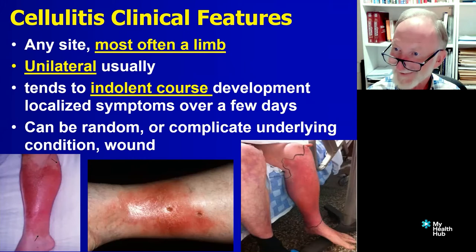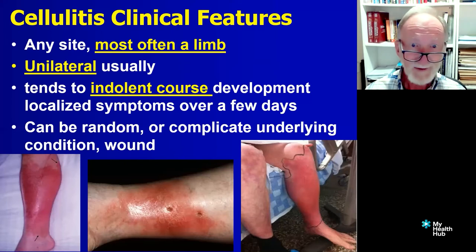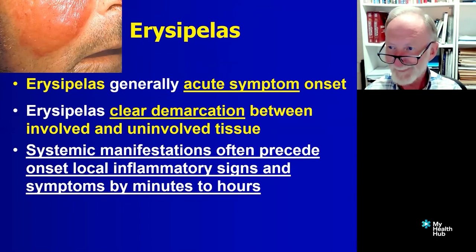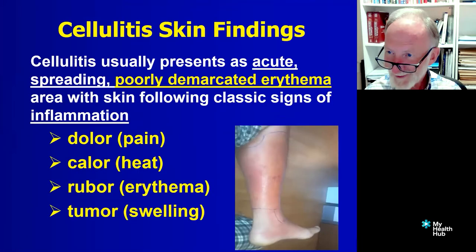If somebody had come from overseas and they had cellulitis, think of things like that. Rabies is another one to think of if there was a bite. Erysipelas: generally acute symptom onset rather than the indolent course of cellulitis. Clear demarcation, unlike cellulitis, where you know where it's up to but it's not really sharp. Systemic symptoms often come ahead of the local inflammatory response. Skin findings: pain, heat, redness, erythema, and swelling — and generally a relatively poorly demarcated edge. First signs of systemic feeling unwell: fever, chills, rigors.